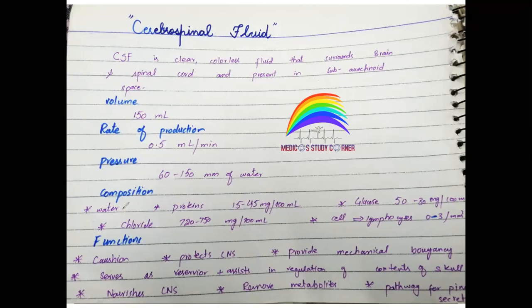Now let's talk about the main functions of CSF. First, if there is trauma or the brain is hit, CSF acts as a cushion — it provides mechanical buoyancy so the brain doesn't get damaged. It also serves as a reservoir of nutrients, assists in regulation of intracranial content, nourishes the CNS, removes metabolites, and serves as a pathway for pineal secretions.